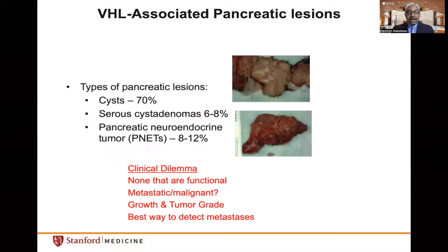The remaining solid pancreatic lesions may be neuroendocrine tumors. In all published studies, these VHL-associated pancreatic neuroendocrine tumors are non-functional — they do not secrete insulin, gastrin, or somatostatin — so hormonal excess is not a clinical concern. The more important question is whether the tumor is malignant, whether metastatic disease is present, and what influences management. Key factors include tumor grade, which correlates with metastatic or malignant potential, and the growth rate of the primary tumor.